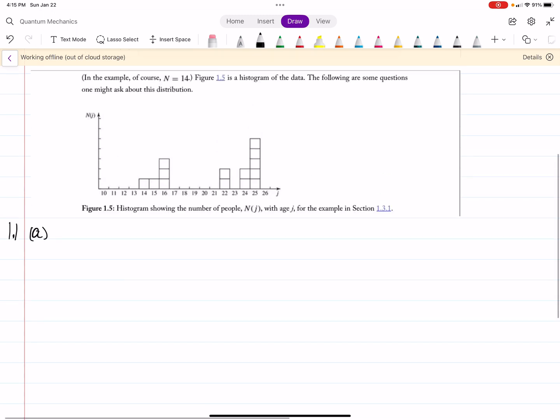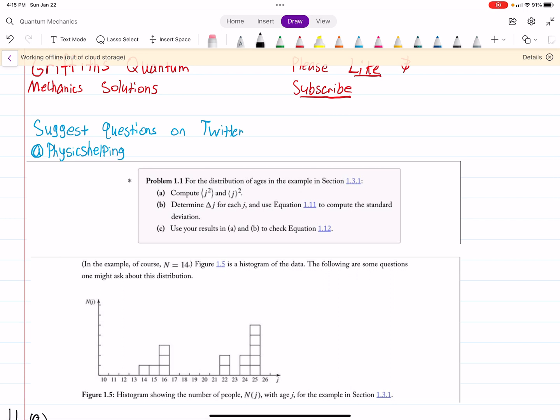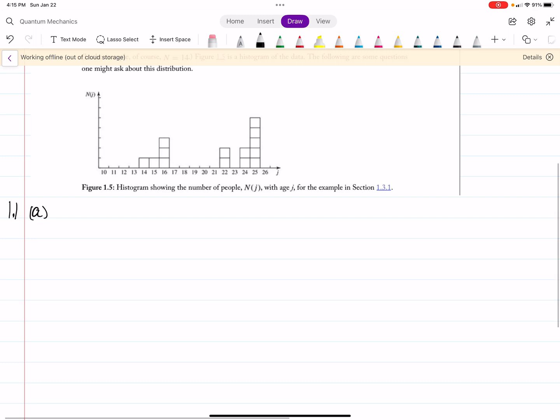So it wants us to calculate the expectation of J squared and the expectation of J then squared. So where that exponent is matters. Okay, so let's do that. So the way that we do this is how we would calculate any expectation value. So for example, we can see the point 14. We're going to square that now since we're doing J squared.